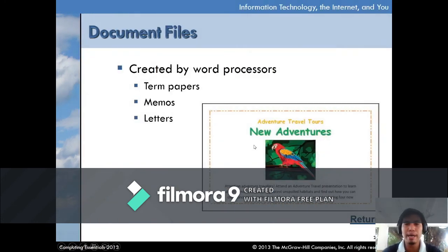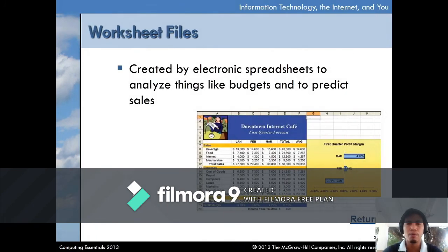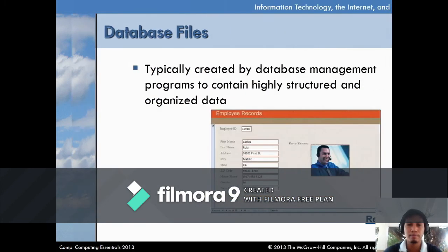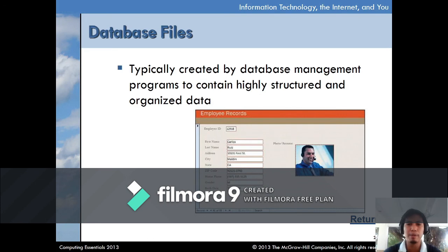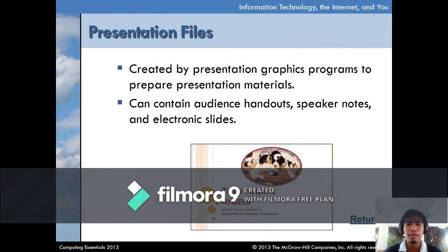There are different file types: document, worksheet, database, and presentation files. Document files are created by word processors — examples include term papers, memos, and letters. Worksheet files are created by electronic spreadsheets to analyze things like budgets and predict sales. Database files are created by database management programs to contain highly structured and organized data — a database is like an electronic file cabinet where data is sorted and organized. Presentation files are created by presentation graphics programs to prepare presentation materials, and can contain audience handouts and speaker notes.